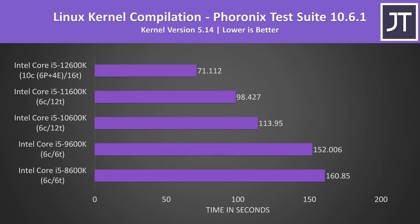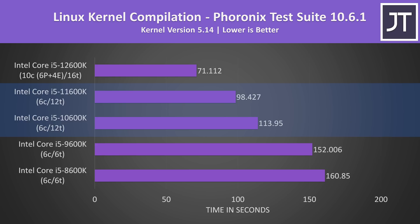Linux kernel compilation is the only test done on Linux rather than Windows 11. This is a multi threaded test, and as the thread count of the i5 has improved over the years, it's no surprise to see the newer options completing the task faster. The difference between 8th and 9th gen wasn't that big, and 10th and 11th gen weren't super different either, as both sets have the same core and thread count. 12th gen completes the compilation task 38% faster than 11th gen as the addition of e-cores boosts total thread count.